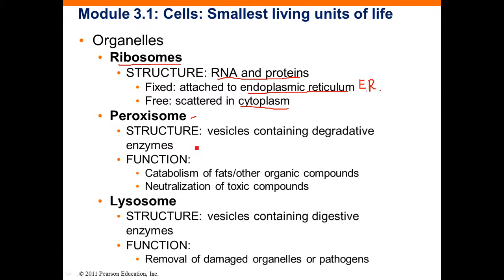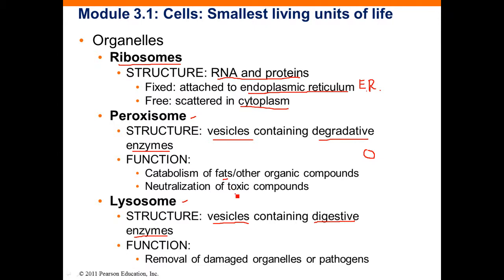Lysosomes are sometimes called suicide sacs because they have powerful digestive enzymes. Peroxisomes are somewhat similar — both are types of vesicles. Vesicles are little round bubble-like structures made of membrane. In the case of peroxisomes, they also have digestive enzymes that break down fats and other organic compounds and destroy toxic materials.